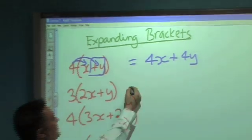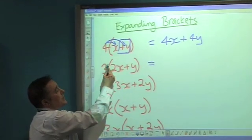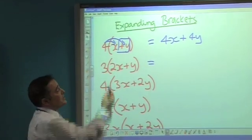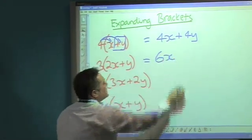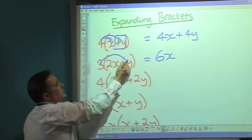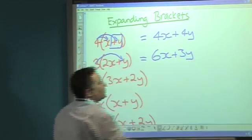Look at the next one. Again, multiply everything outside the bracket by what's inside. So 3 times 2x—3 times 2 is 6—gives me 6x. And 3 times a positive y gives me a positive 3y.